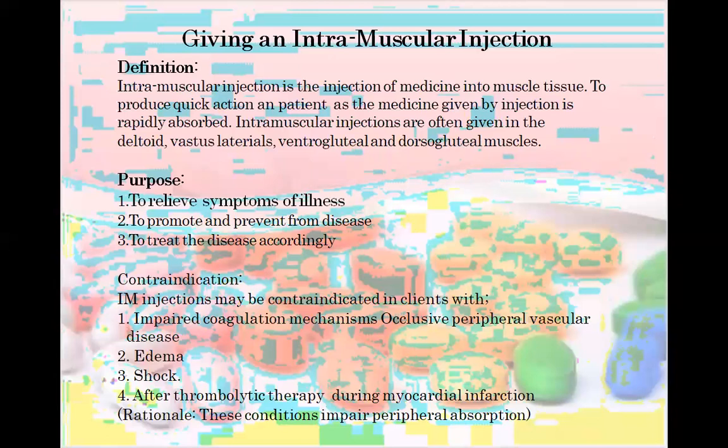The purposes of giving intramuscular injection are: to relieve symptoms — for example, if a patient has pain and we give an analgesic drug such as diclofenac sodium, the patient's pain is reduced; to promote and prevent from diseases; and to treat the disease accordingly when a patient is already diagnosed.